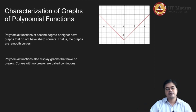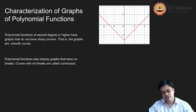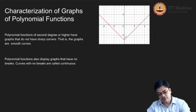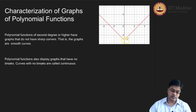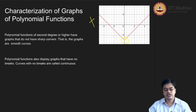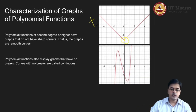So let us identify through two graphs. Looking at this first graph — is this a polynomial function? Does it satisfy the first criteria of being a smooth curve? It is mostly smooth, but if you look at this point, it has a sharp corner over here. This corner is very sharp and therefore I cannot qualify this as a polynomial function. This is not a polynomial function.